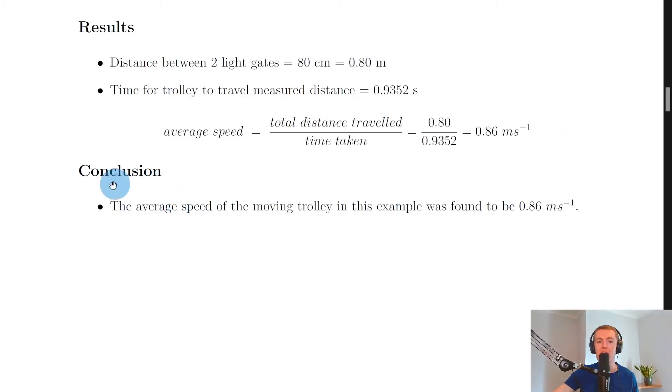This equals 0.86 meters per second. To conclude, we can answer the aim: the average speed of the moving trolley in this example was found to be 0.86 meters per second. A good rule of thumb is that a trolley in the lab should be roughly at walking speed, which is roughly one meter per second.